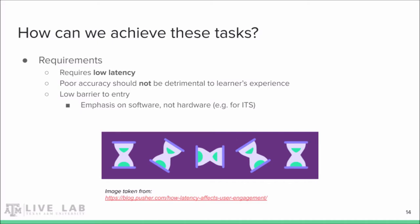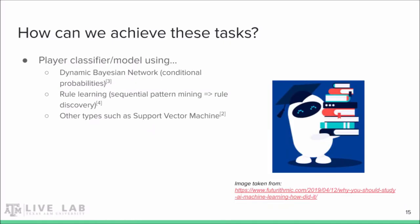This means that specialized hardware or other costly sensors are undesirable for our purposes. To successfully create either an intelligent tutoring system or an adaptive game experience, we will need to model the player's current knowledge, emotions, actions, or other relevant data to determine their learning goal at any point in time. Game-based learning literature shows that there are quite a few options for doing this with decent success, including dynamic Bayesian networks, rule learning, and support vector machines.